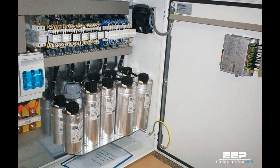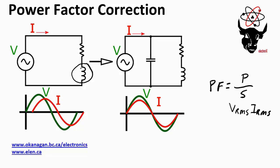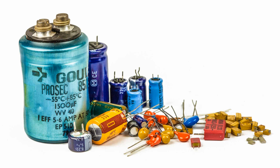Filter capacitors utilize capacitive coupling to shunt high-frequency interference signals to ground, preventing them from propagating through the electrical system and causing disruption to sensitive equipment. Filter capacitors also help ensure compliance with electromagnetic compatibility (EMC) and EMI/RFI requirements.